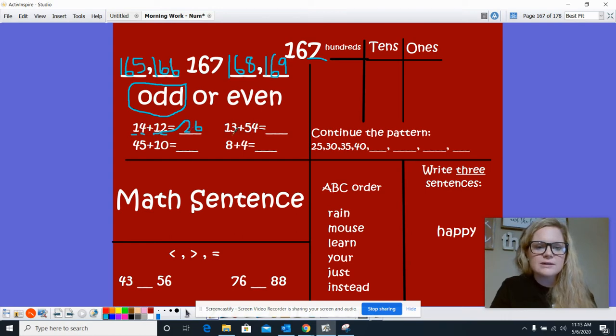13 plus 54. Let's look at the ones place. 3 plus 4 is 7 and our tens place 1 plus 5. So in the tens place we're going to put a 6. So 13 plus 54 equals 67.